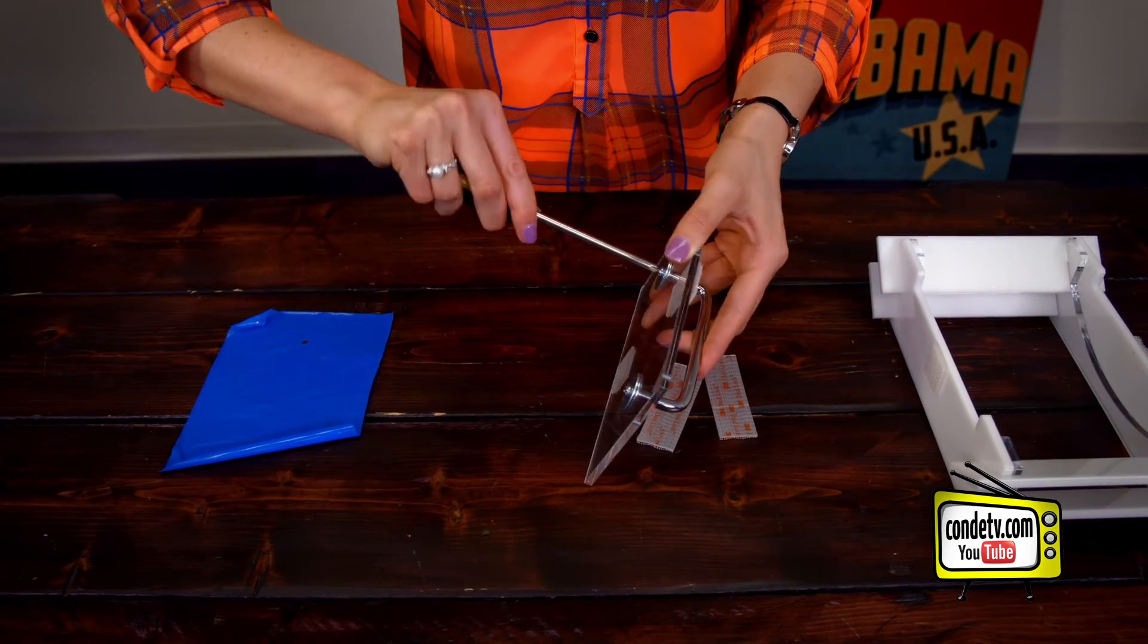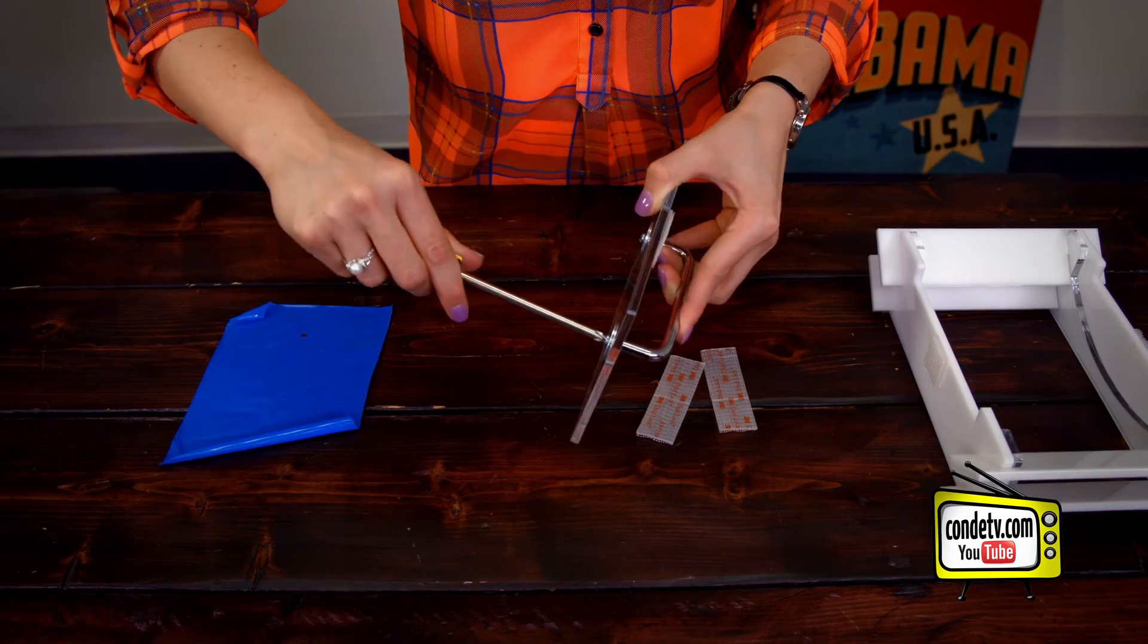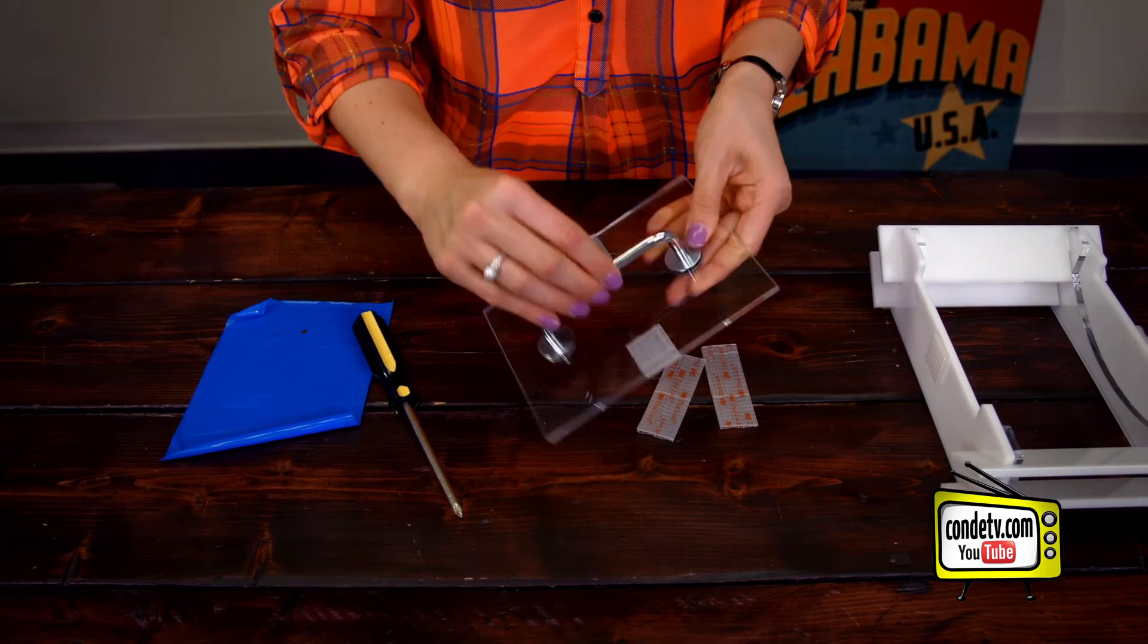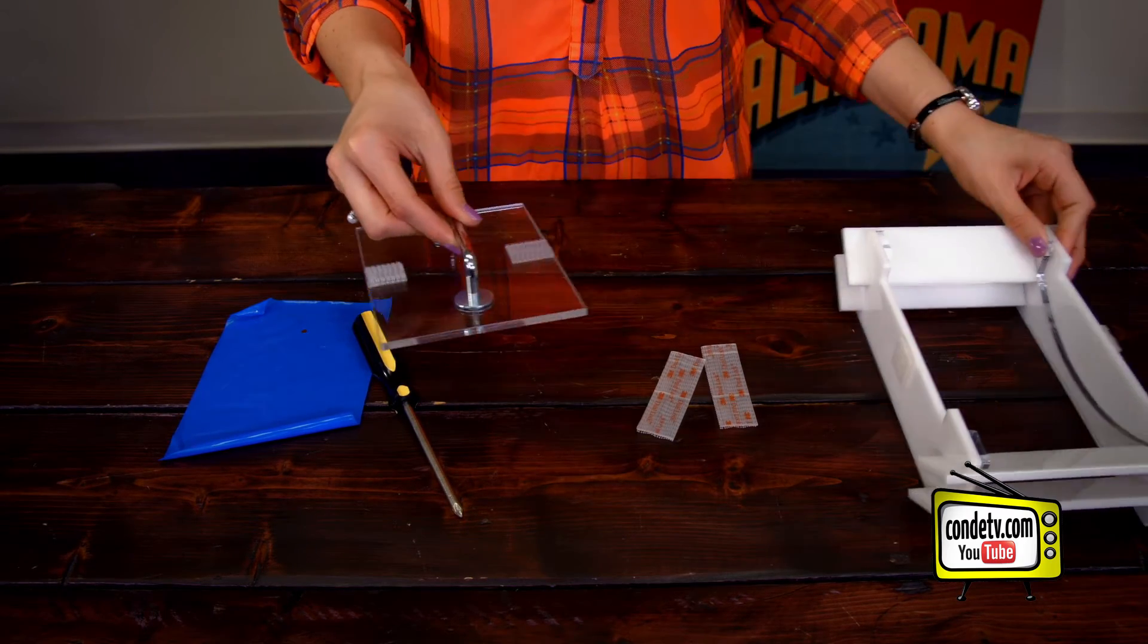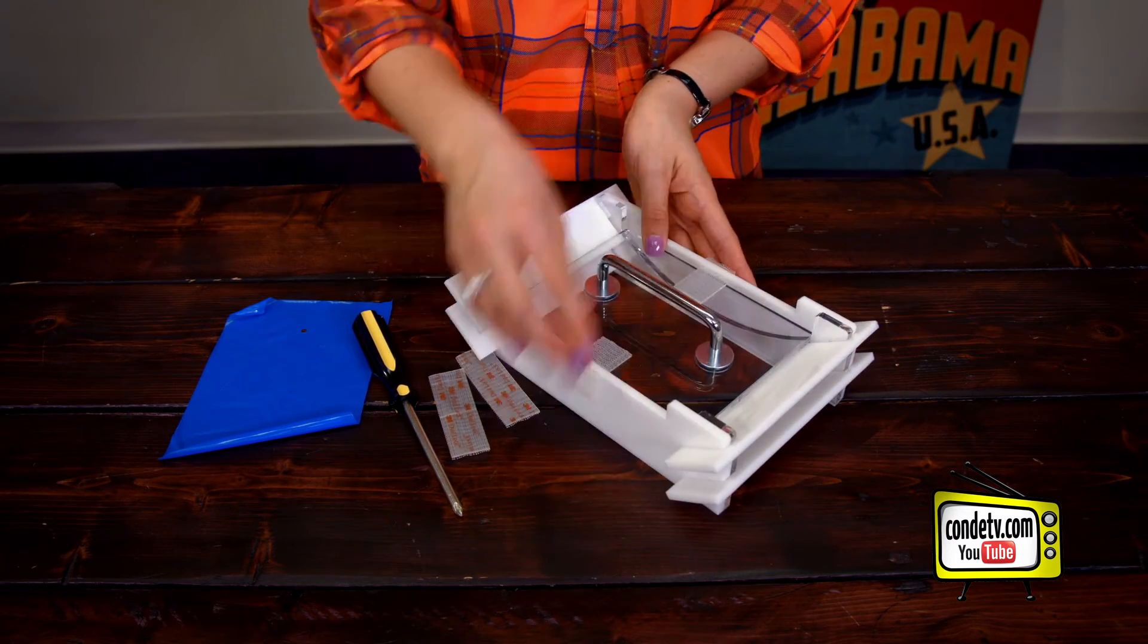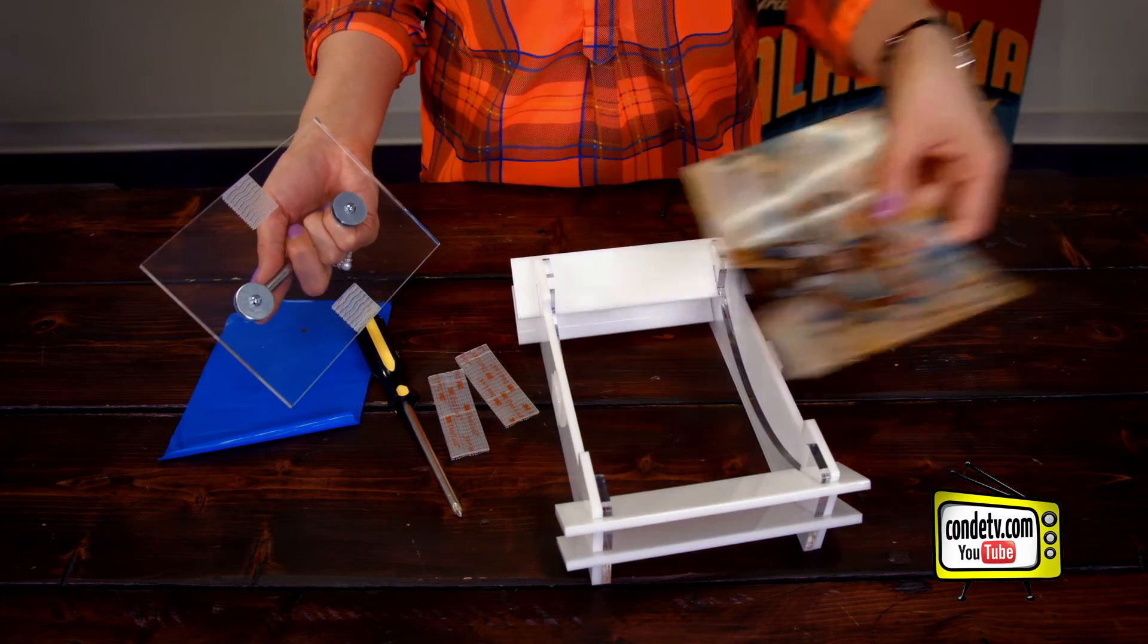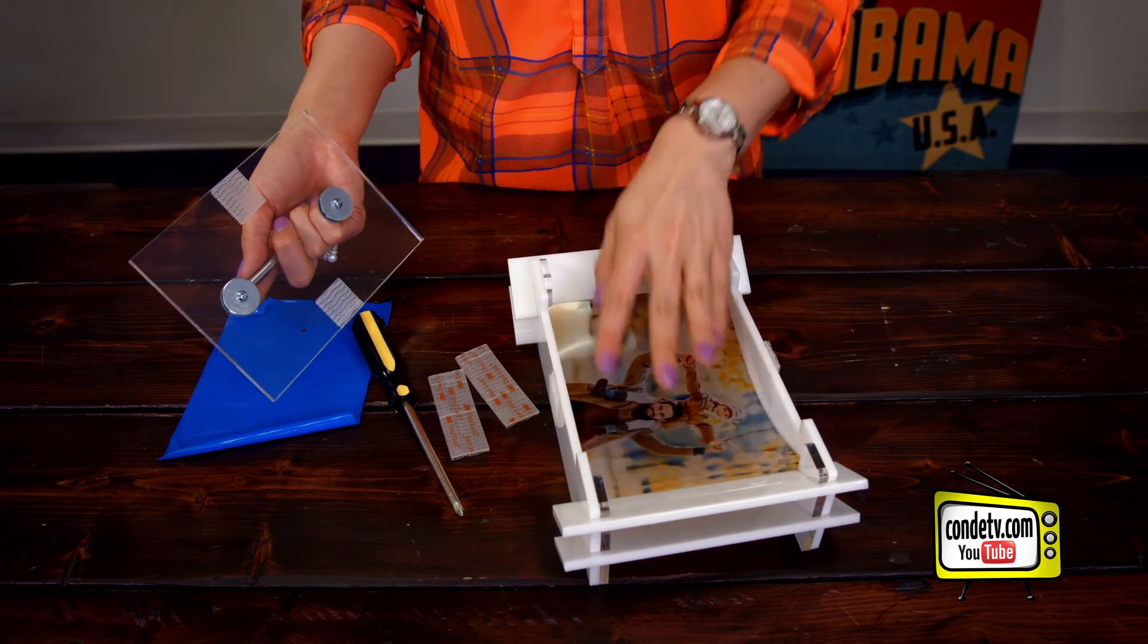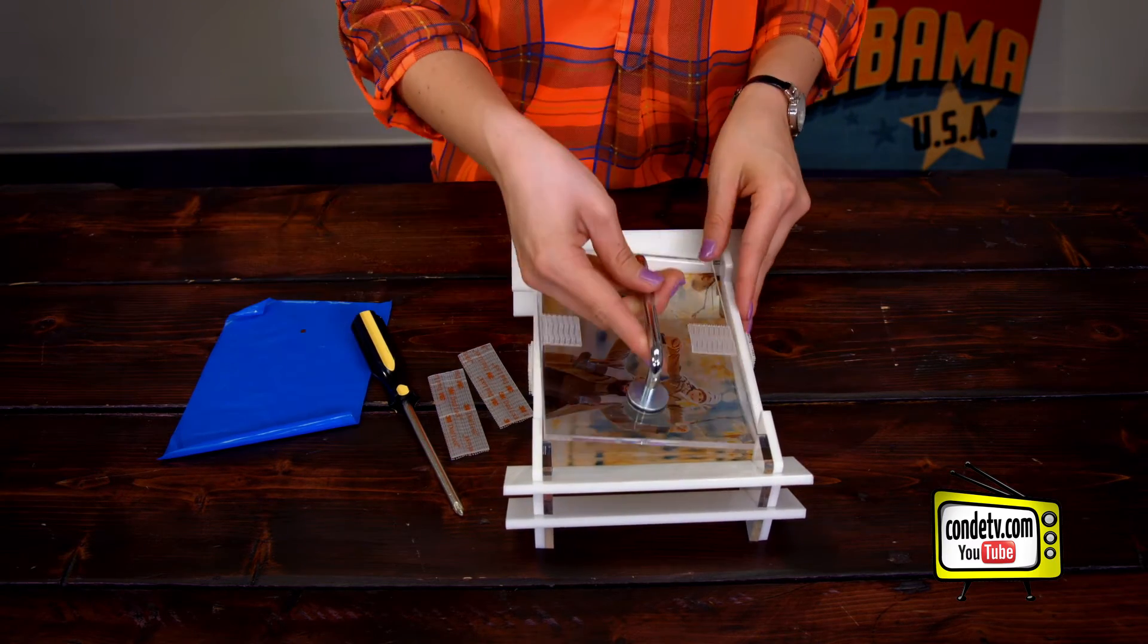So now it's time to put that lid right there on our jig. And as you can see, the five by seven acrylic panel fits nice and secure in our jig.